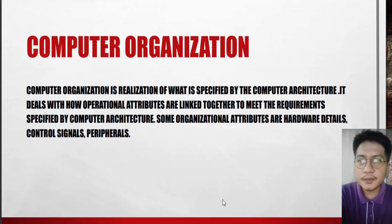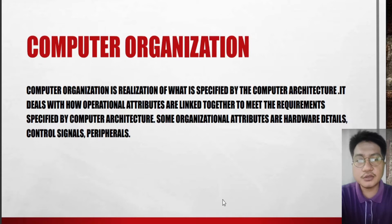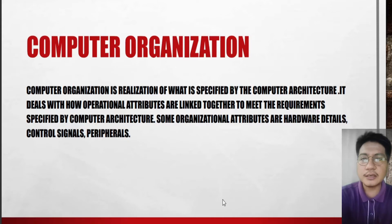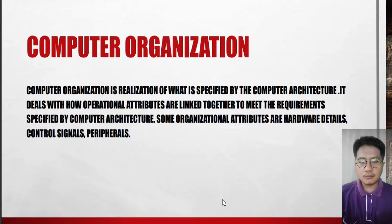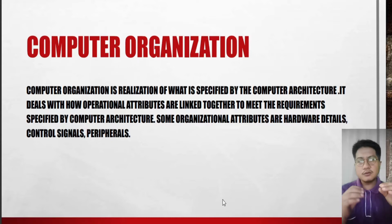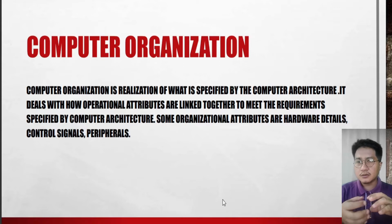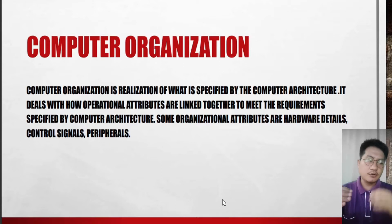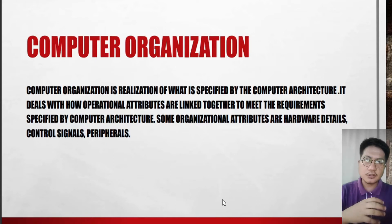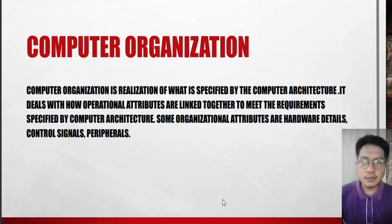If you say computer organization, it is the realization of what is specified by the computer architecture. It deals with how operational attributes are linked together to meet the requirements. In other words, computer organization is how computer peripherals are connected to each other — for example, physically, your keyboard, your mouse connected to your system unit, your monitor, your printer, camera, and any other peripherals.